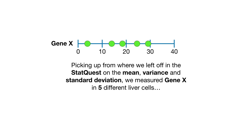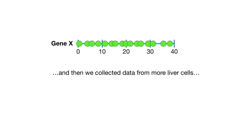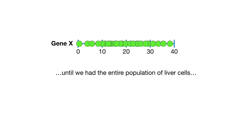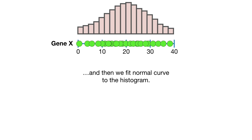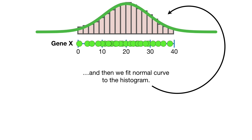Picking up from where we left off in the StatQuest on the mean, variance, and standard deviation: we measured GeneX in five different liver cells, then collected data from more liver cells until we had the entire population. We used all of that data to draw a histogram and fit a normal curve to it.